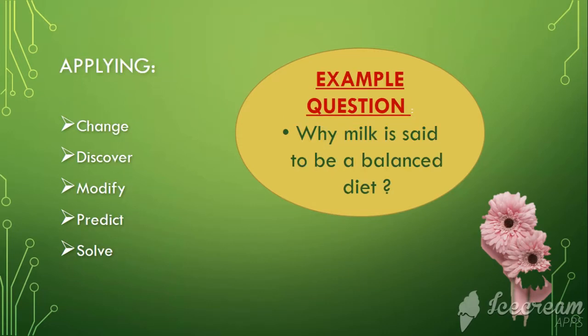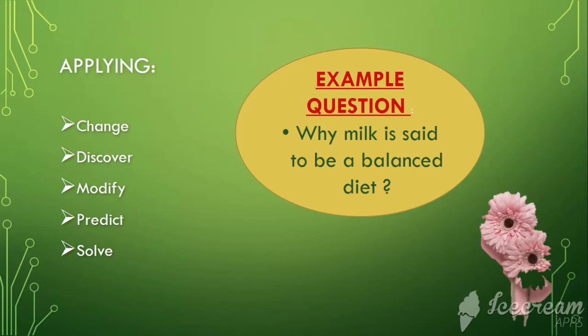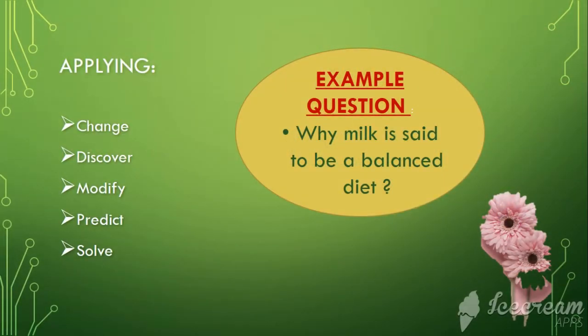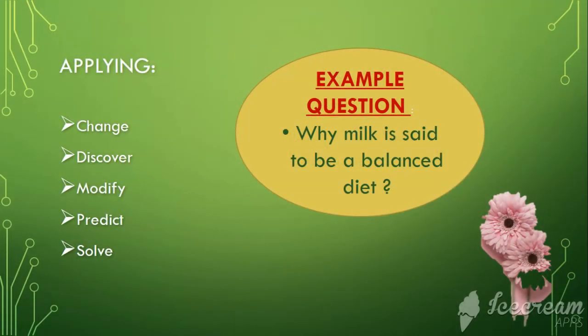Next form of question is applying. It is the ability to use previously learned material and use it in a new situation in a form that is helpful to yourself and others. It goes deeper beyond the simple comprehension of the material to be able to apply it into a new form. Example of this type of domain is why milk is said to be a balanced diet. Why do you think the plant shrinks when you cover the pot of the plant? What are the questions we ask for the learners to understand the concept and make them apply their knowledge? Those type of questioning will come under the applying domain.